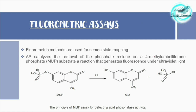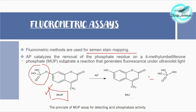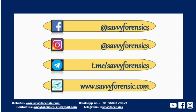Fluorometric methods are used for semen stain mapping. Acid phosphatase catalyzes the removal of a phosphate residue from a 4-methylumbelliferyl phosphate substrate, a reaction that generates fluorescence under UV light. The substrate 4-methylumbelliferyl phosphate is fluorescent; once the phosphate is removed, 4-methylumbelliferyl is formed, which is detected when UV light is irradiated on the sample. This is another approach for the preliminary detection of semen.